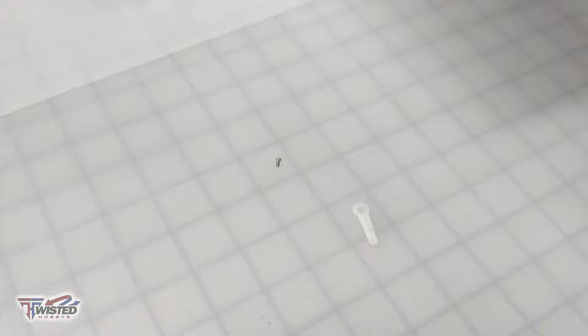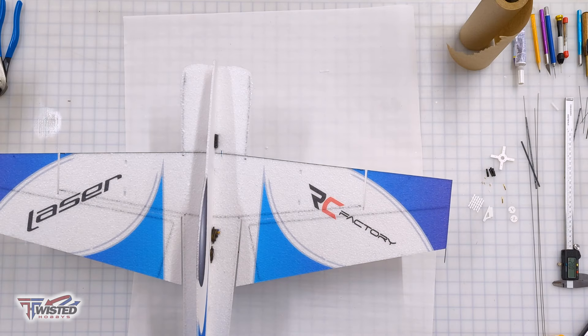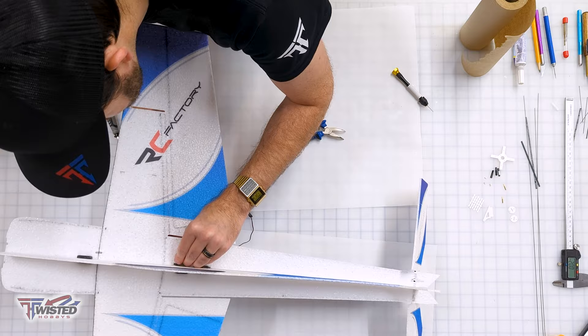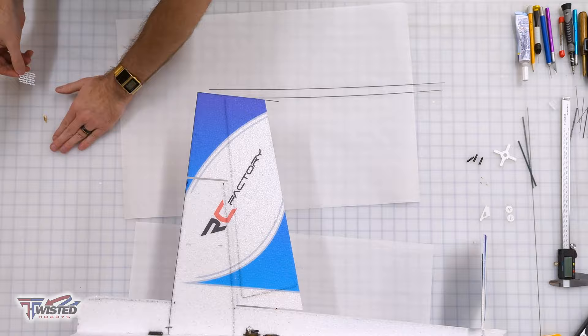Now we're working on the servo horn extender for the elevator and it's done the same way. You could also just use a screw through this but the pinning with the carbon fiber piece is a pretty elegant way to do it. We put the clevis end on there because it's easier to do when it's off the plane and then we attach it to the servo.